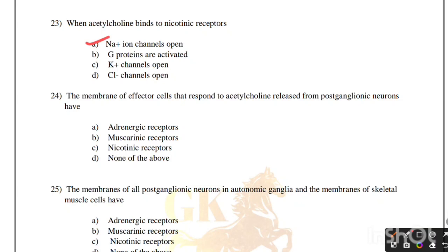The membrane of effector cells that responds to acetylcholine released from postganglionic neurons has: adrenergic receptors, muscarinic receptors, nicotinic receptors, or none of the above. Correct answer is option B, muscarinic receptors.